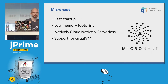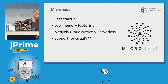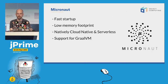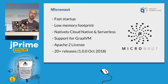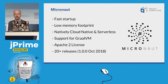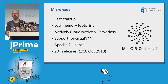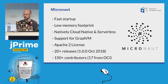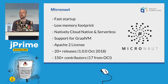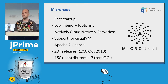Of course, we support GraalVM — a new polyglot JVM from Oracle. I'll show you how it works in the demo. Micronaut is open source under Apache 2 license. We released 1.1 in October last year and have released more than 20 releases since then — the last one was 1.1.2, released last week. We have something like 150 contributors, 17 from OCI, and the rest are community contributions. We receive pull requests pretty much every day.